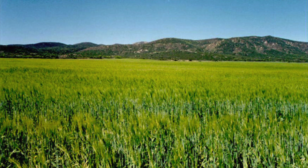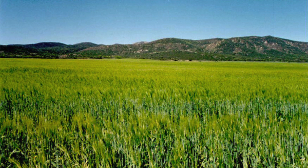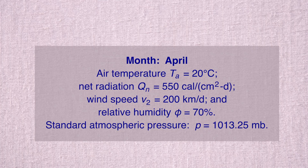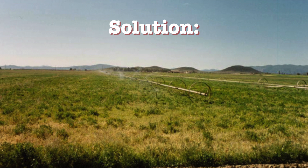Calculate the evaporation rate of the reference crop by the Penman-Monteith method for the month of April for the following atmospheric conditions: air temperature T sub A equal 20 degrees Celsius; net radiation Q sub N equal 550 calories per square centimeter per day; wind speed v sub 2 equal 200 kilometers per day; and relative humidity phi equal 70%. Assume standard atmospheric pressure. The saturation vapor pressure gradient is then computed.